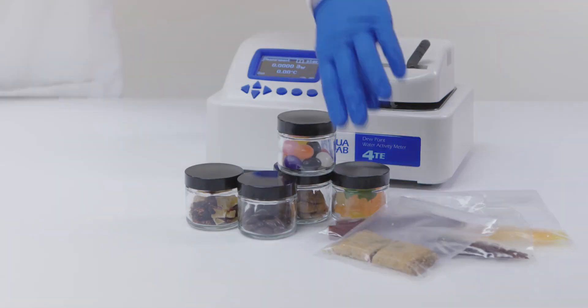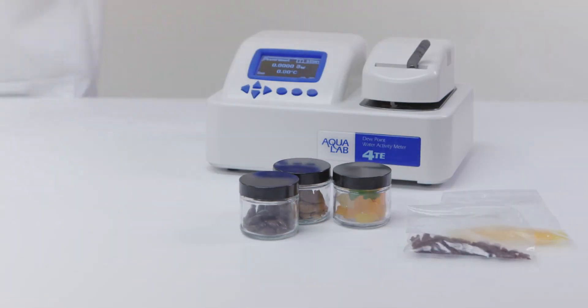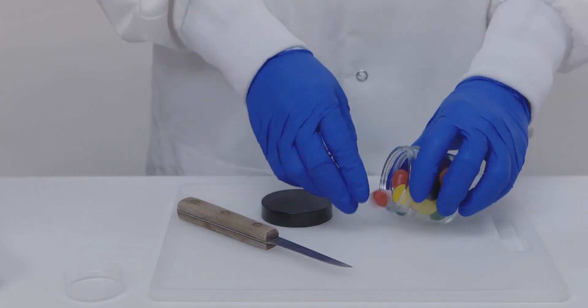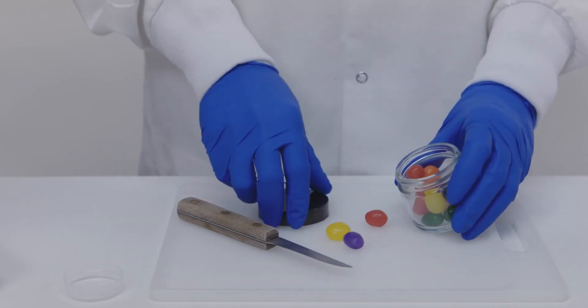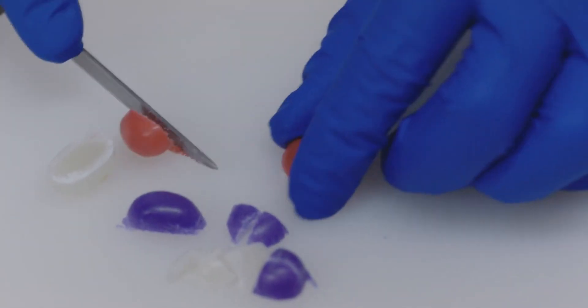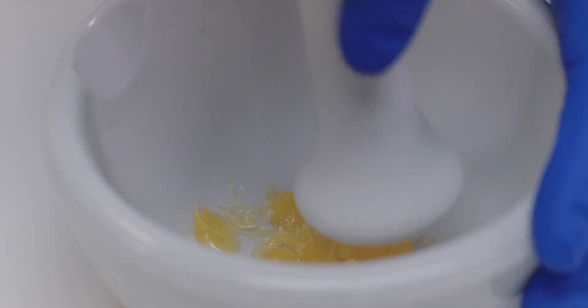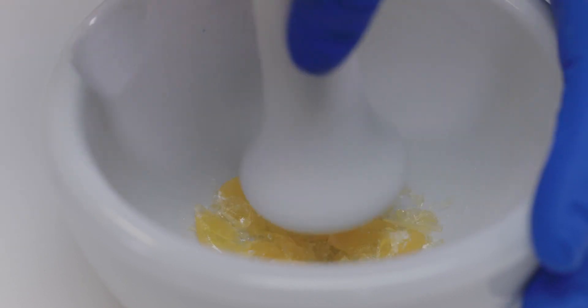There are a couple of products that need special handling. Products with a moisture barrier like coated candies may be slow to come to equilibrium. They can be cut or crushed to expose the interior. Don't grind them though, this causes moisture loss.